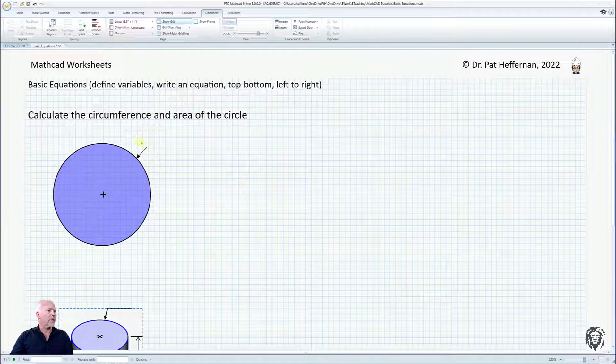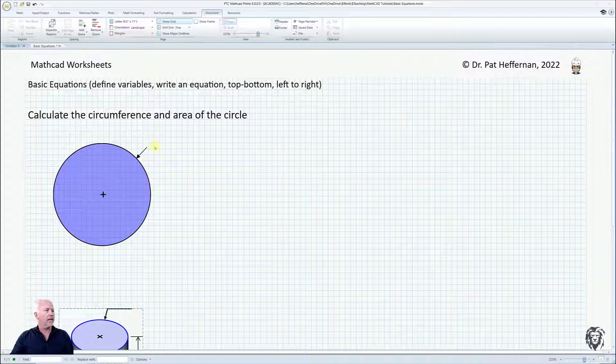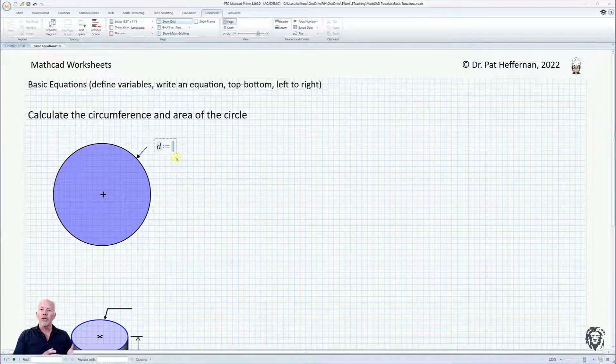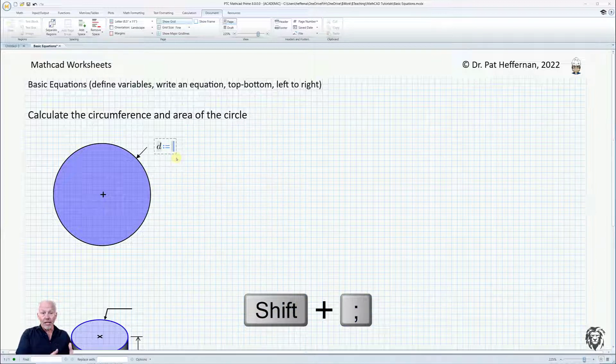First thing, we're going to calculate the circumference and the area of a circle. So we need to define it, and I'm going to define it by its diameter. To do that, MathCAD uses this special equal sign, a definition sign.